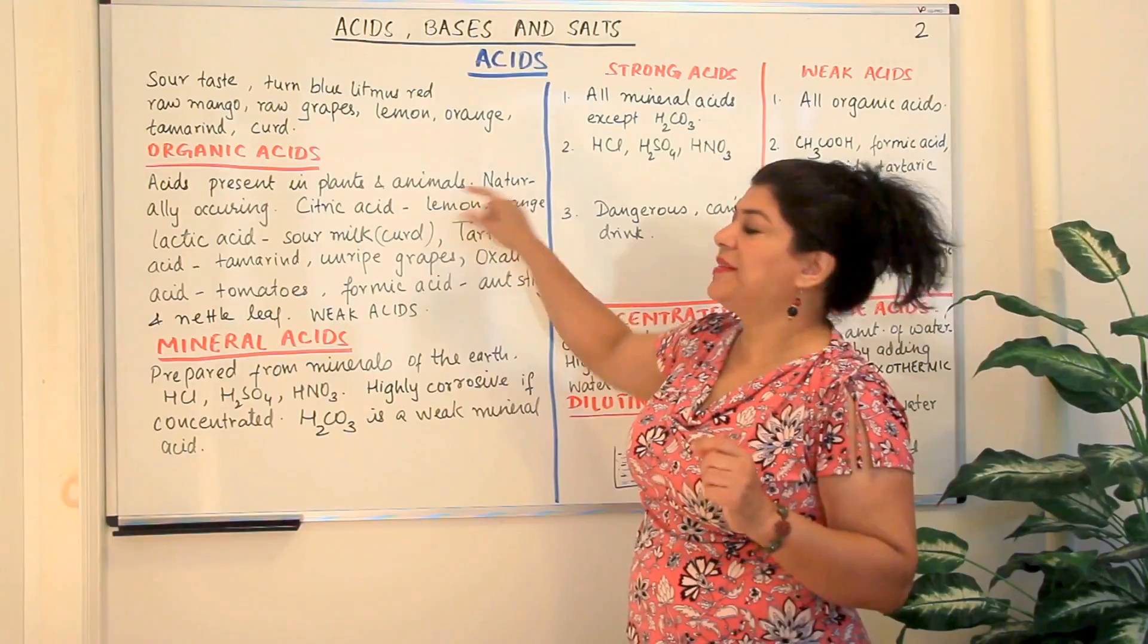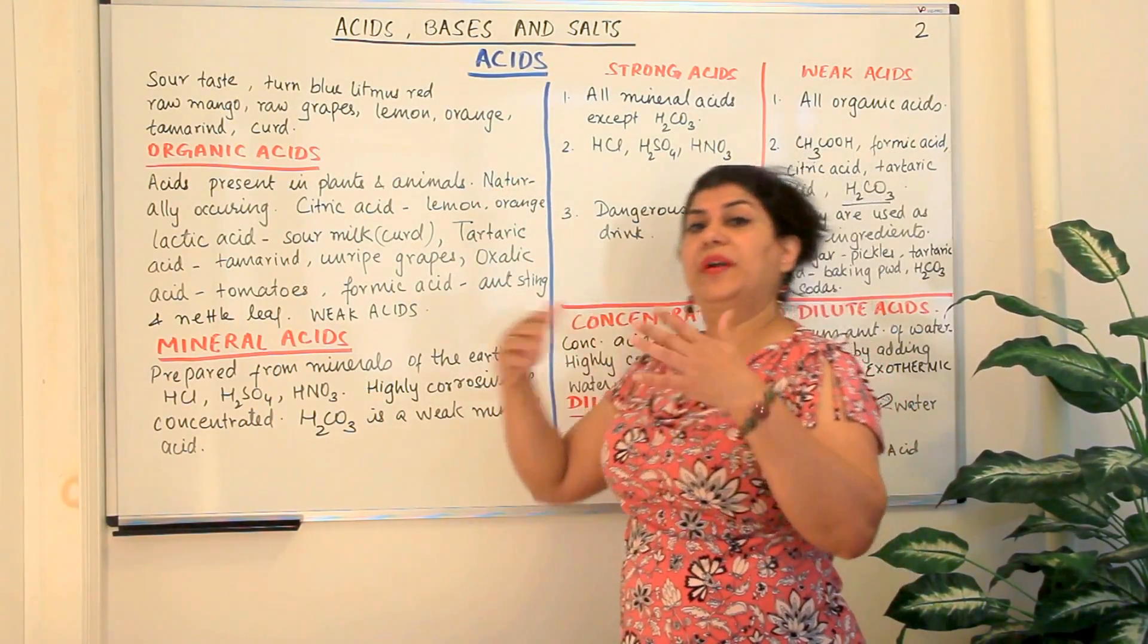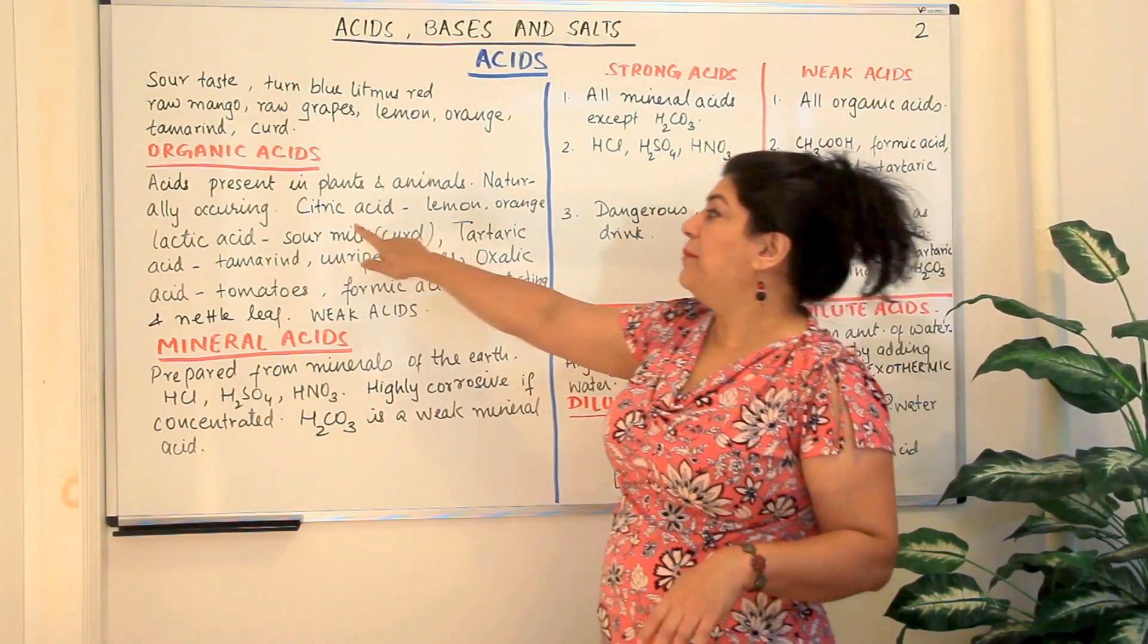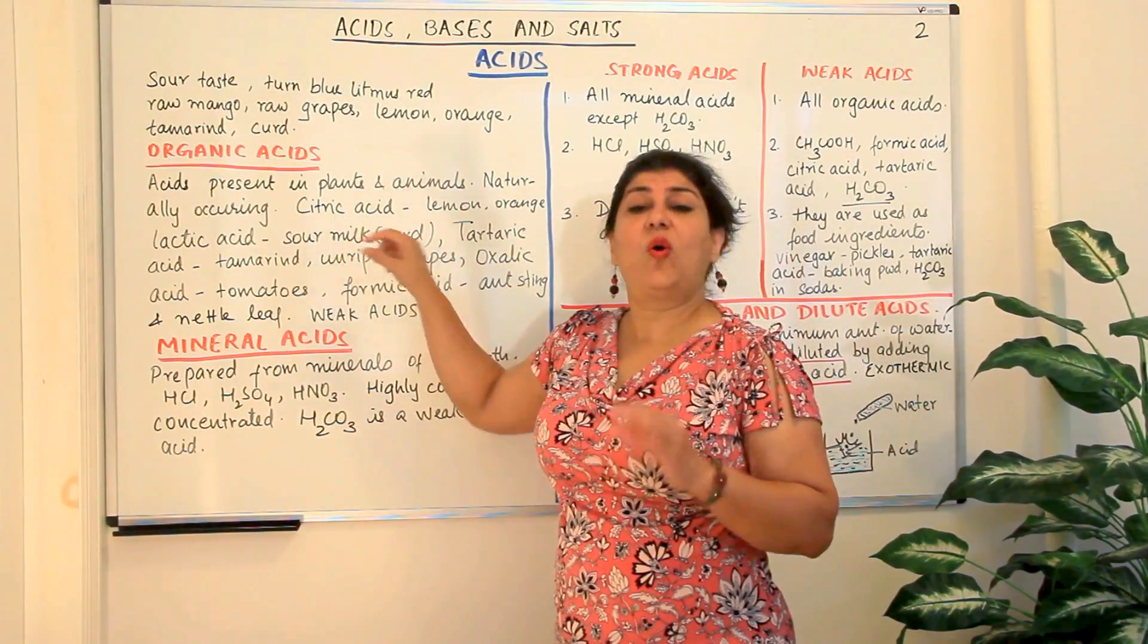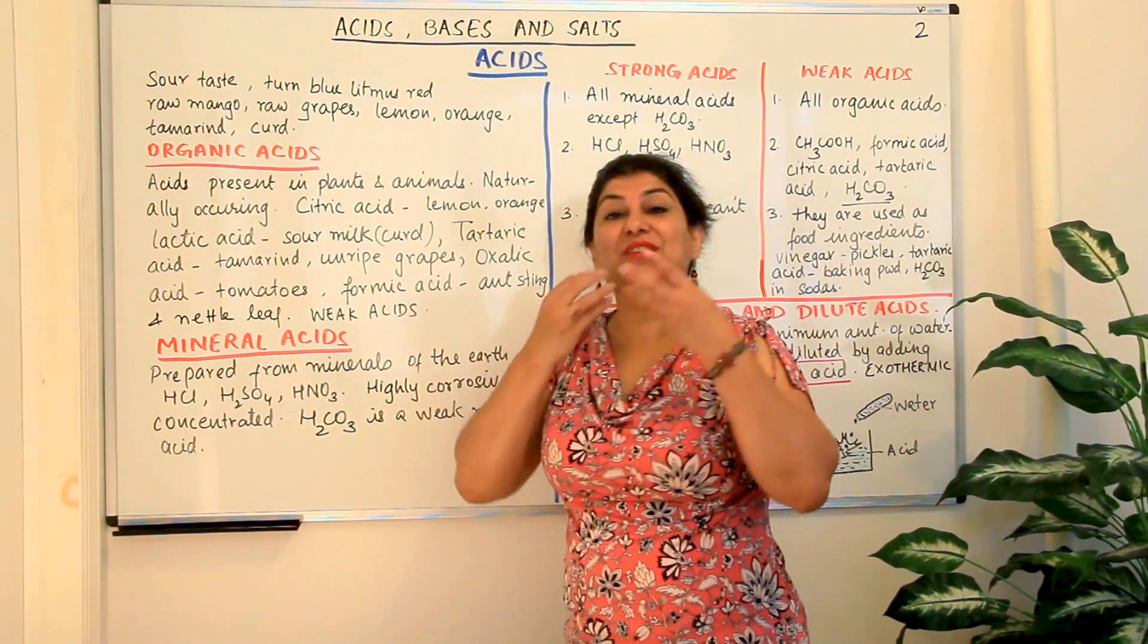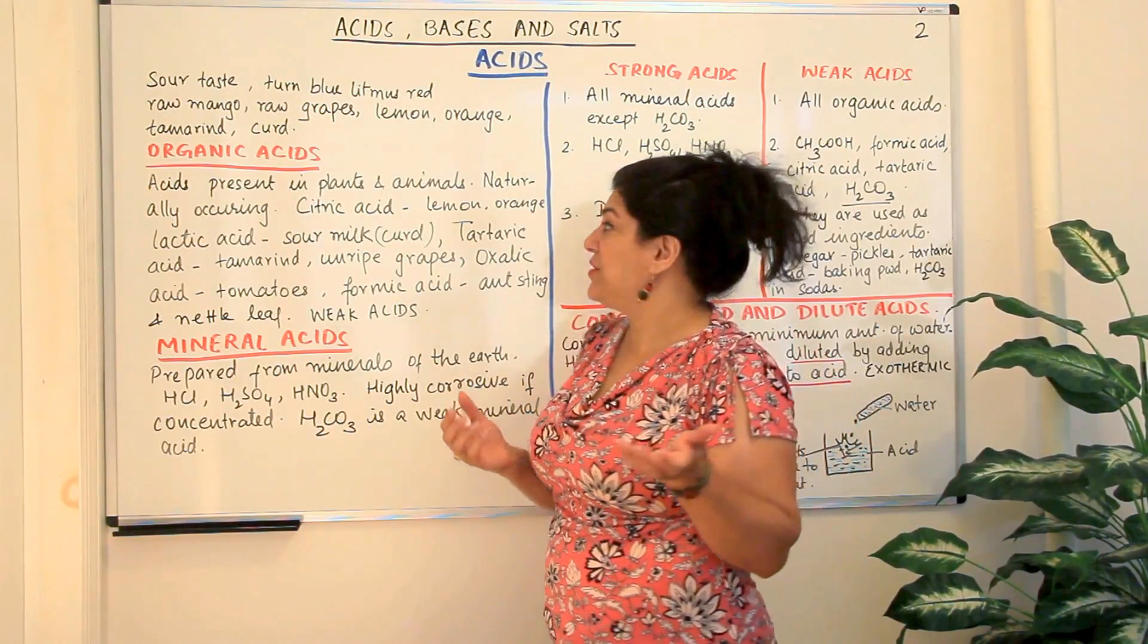Organic acids are acids which are present in plants and animals. For example they are naturally occurring, they are already present in plants and animals. You only are extracting them. For example citric acid, all citrus fruits have citric acid in them. It is the citric acid which gives you the tangy feel of all the citrus fruits.